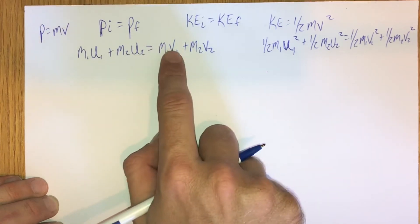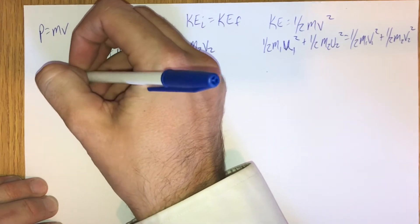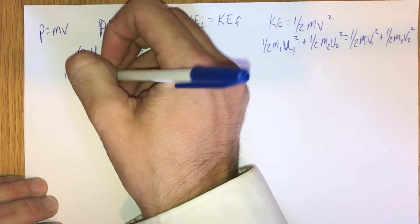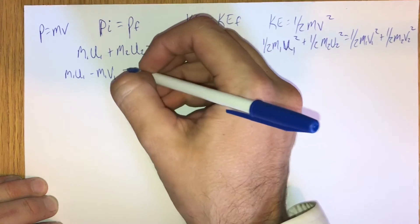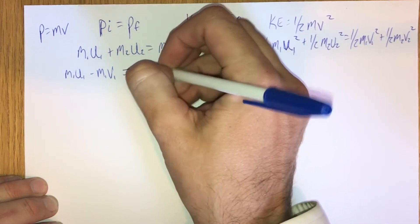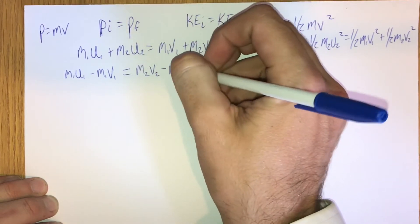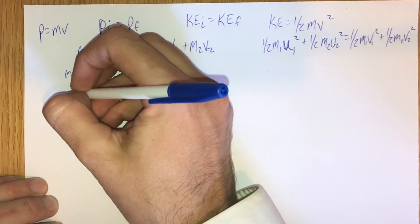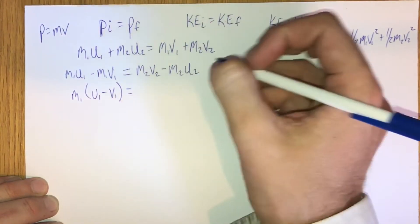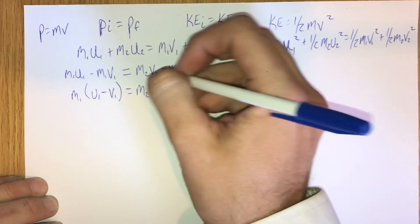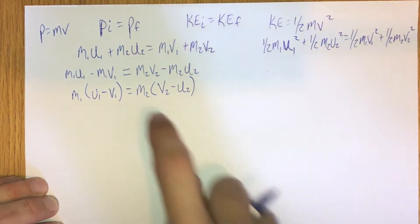Let's get our M1 terms together on one side of the momentum equation and our M2 terms on the other. We subtract to get M1 U1 minus M1 V1 equals M2 V2 minus M2 U2. Factoring out M1 on the left gives M1 times (U1 minus V1), and factoring out M2 on the right gives M2 times (V2 minus U2). That's about as far as we can take that one.